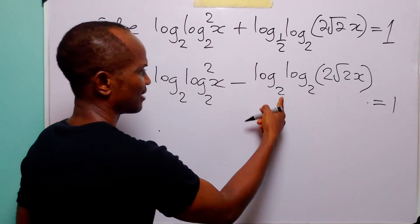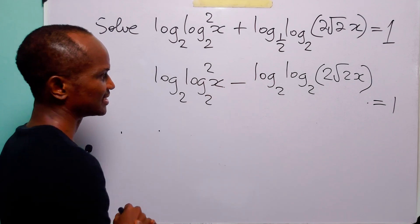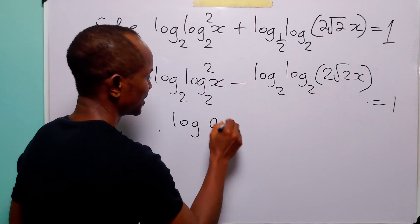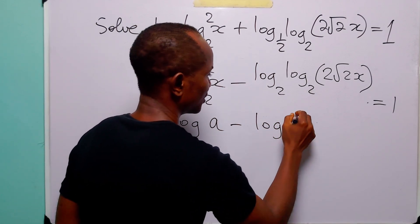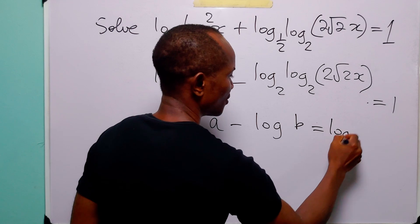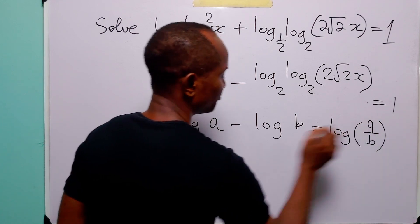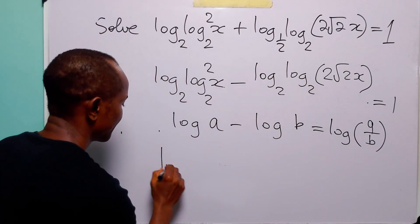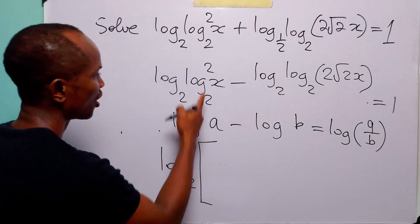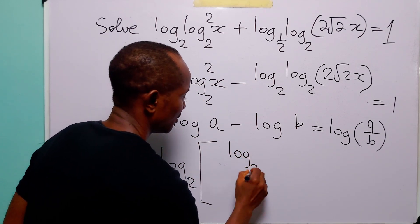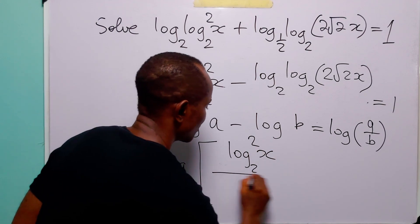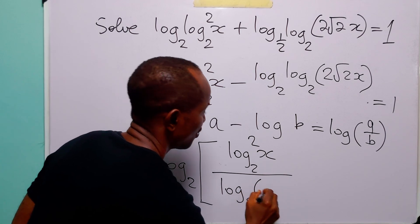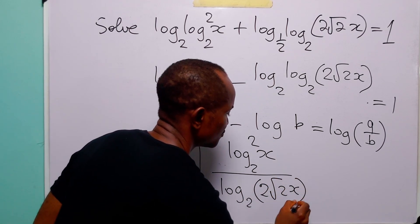Now we have log to base 2 and log to base 2 with a negative sign. Applying the logarithm law that says log a minus log b equals log a over b, we can write this equation as log to base 2 of log to base 2 squared of x over log to base 2 of 2 root 2 x.